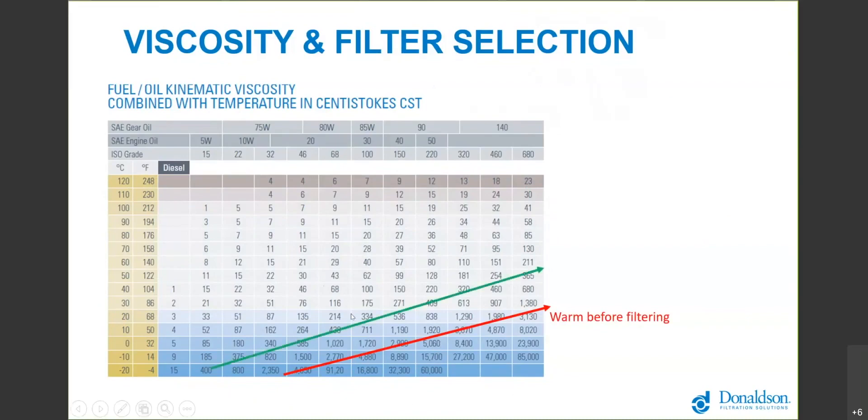Between 300 and 1,700 centistoke viscosity, we like to use our heavy oil filter which will get an ISO target of 18/16/13, and that's the part number DBB 8664. We sell a high viscosity cart that maxes out about 1,700 centistoke with four filters all plumbed in parallel.